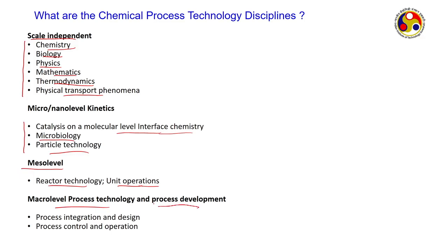At the macro level, process technology and process development is where chemical engineers contribute the most. Process integration and design means: suppose you have two reactions, one exothermic and one endothermic — the heat released by one can be taken up by the other, so you integrate them to minimize utility requirements. Process development means you have a number of unit operations and want to place them sequentially or in parallel. Do you want a bigger reactor first then smaller, once-through or recycled-based process, closed loop? Packages like Aspen, ChemCAD, and HiSys help when it becomes impossible to solve equations by hand for many components.